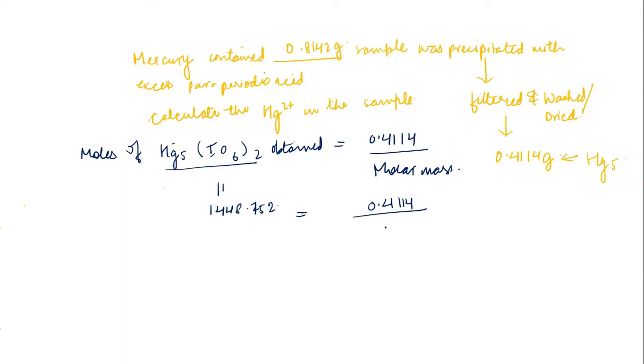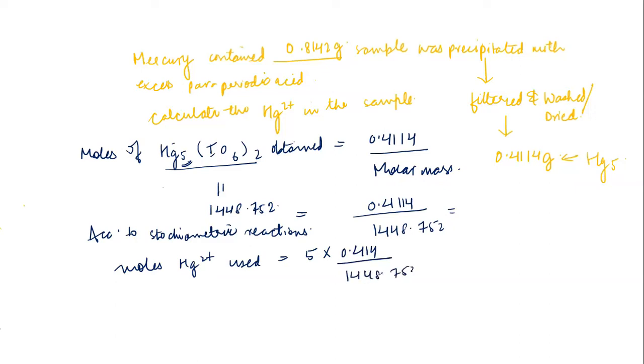According to the stoichiometric reaction, the moles of Hg²⁺ used is equivalent to 5 multiplied by 0.414 divided by 1448.752, since there are 5 mercury atoms in the compound.